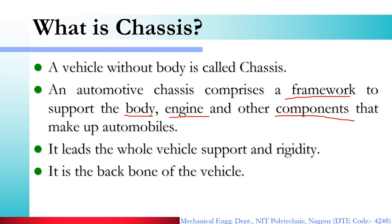Basically, chassis can be known as the backbone of a vehicle. You can understand chassis this way: in the human body, there is a skeletal framework — the frame. Inside it, different components are fitted: heart, kidneys, lungs, brain. All these are like the components and systems of a vehicle. The vehicle won't look good with just the frame and systems, just as your body won't look good without skin. That skin is known as the body in case of an automobile.